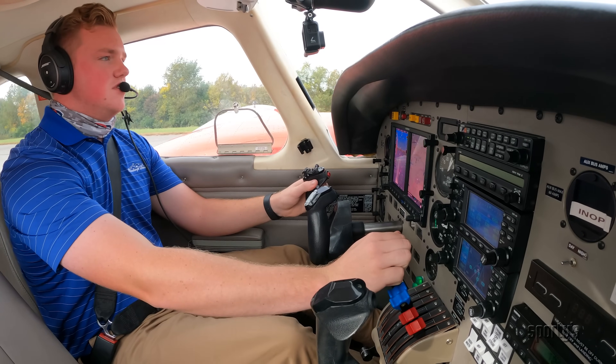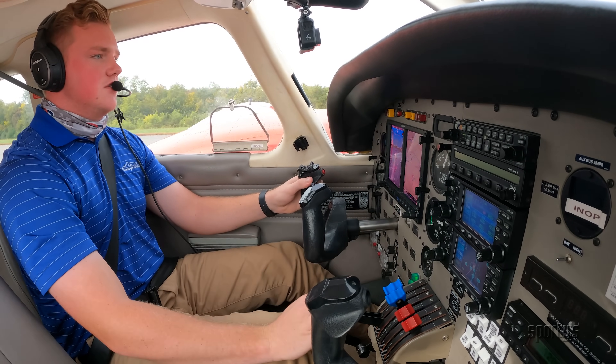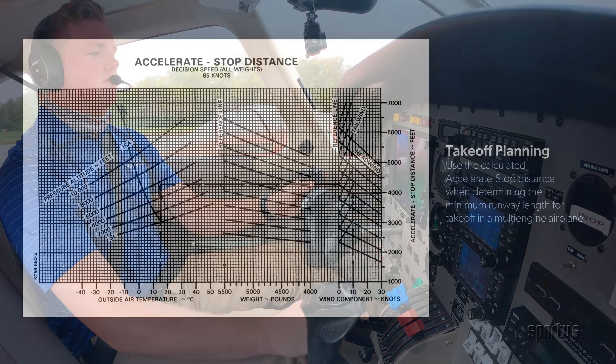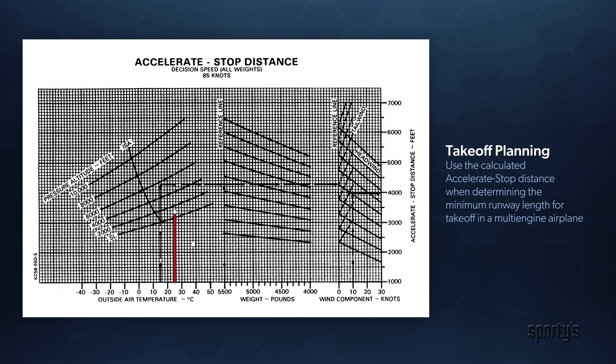Takeoffs may be aborted for other reasons, and the distance has value in these situations as well. While not required for FAR Part 91 operations, it's a good idea to use the calculated accelerate stop distance as your minimum runway length requirement. The conservative pilot will add a buffer to the accelerate stop distance when determining if the runway is sufficient.